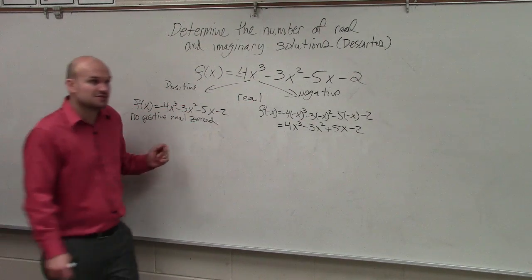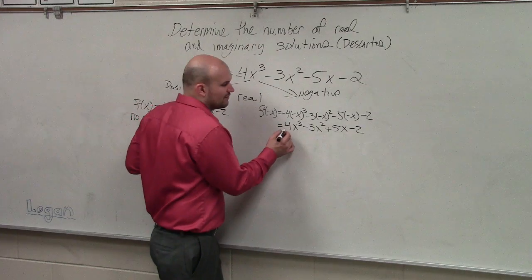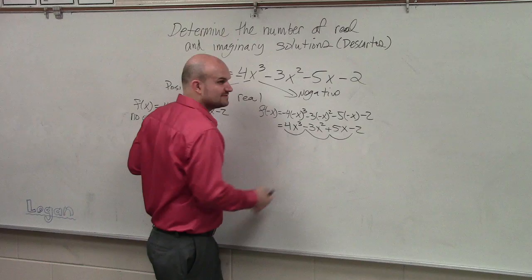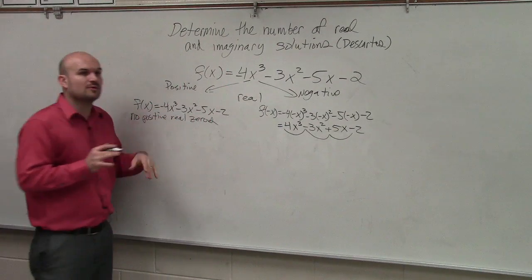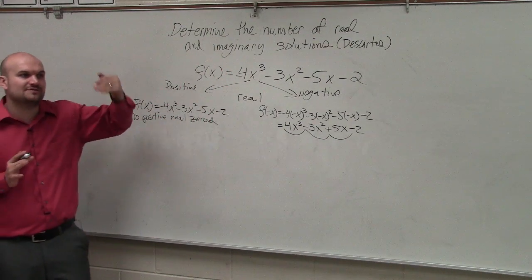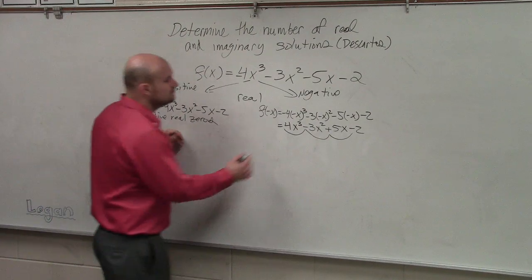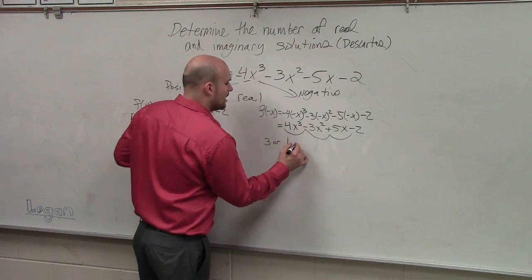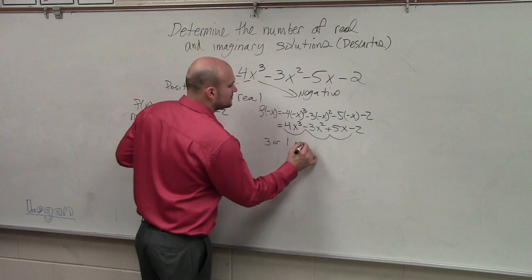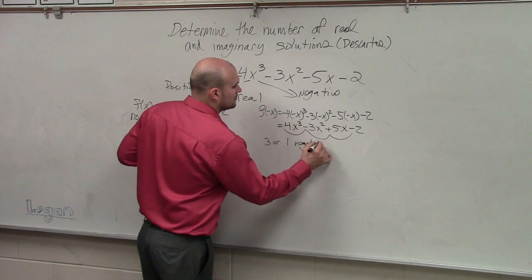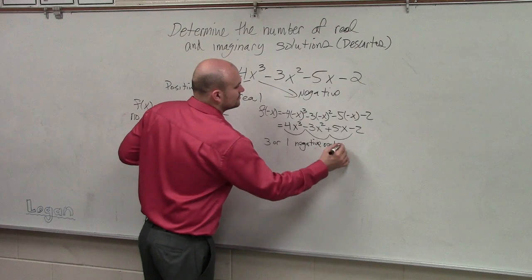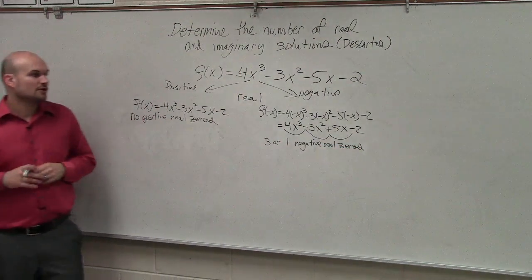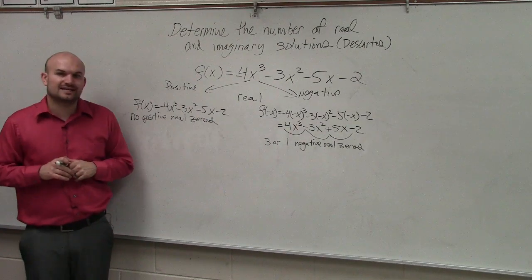But we do have some sign changes in f of negative x. We go from positive to negative, negative to positive, and positive to negative — that is three sign changes. Now remember, when you determine the number of sign changes, you have to subtract an even number. So this gives us three or one negative real zeros.